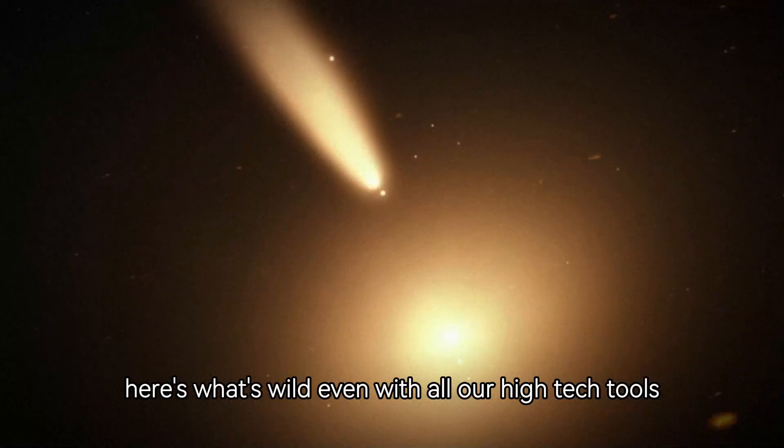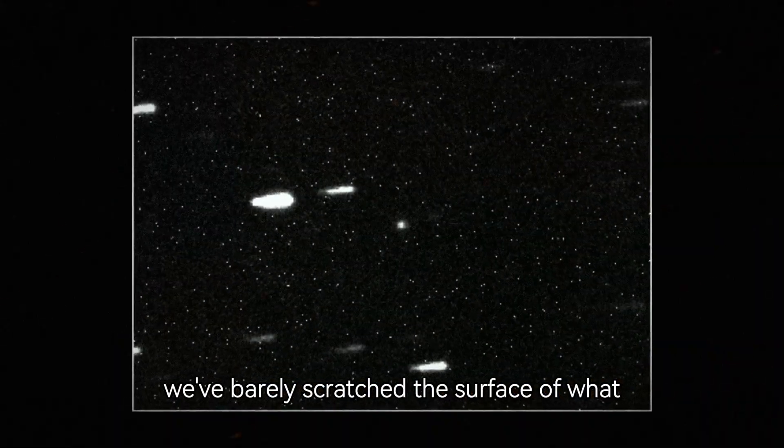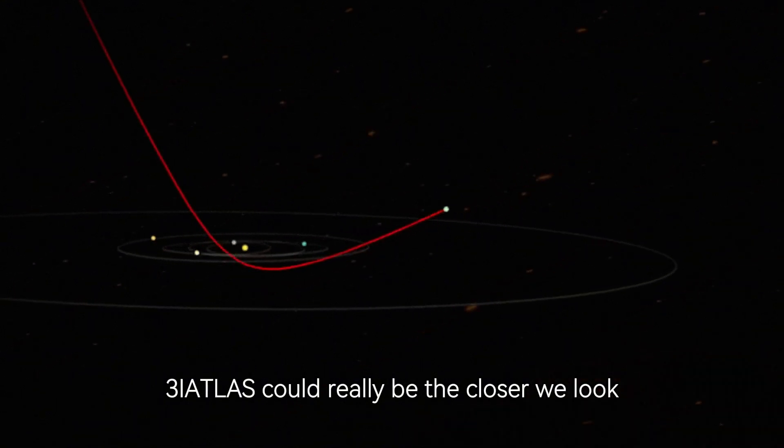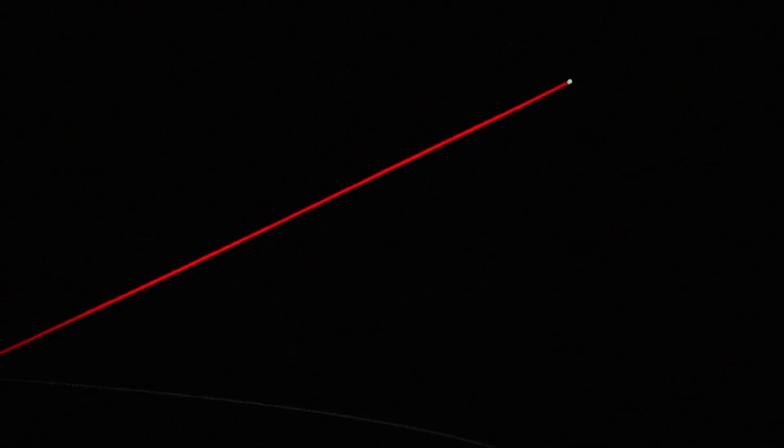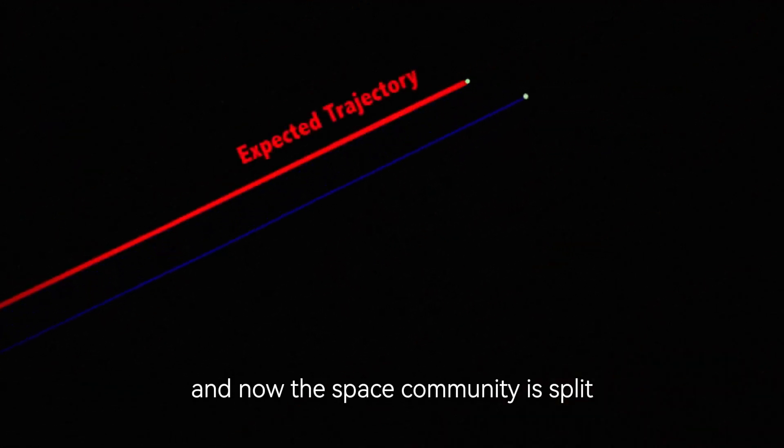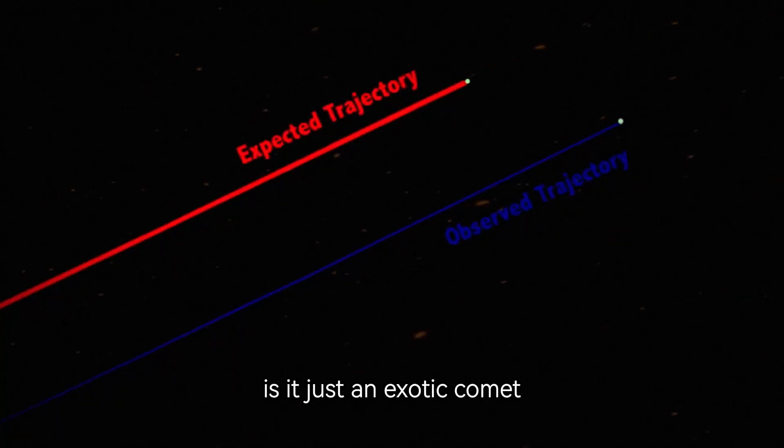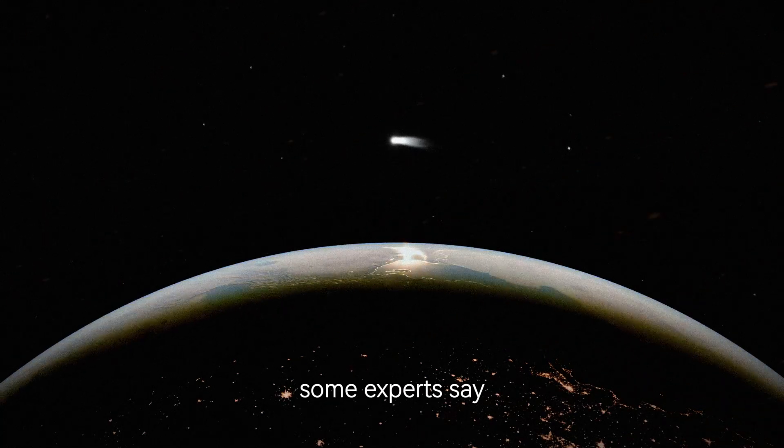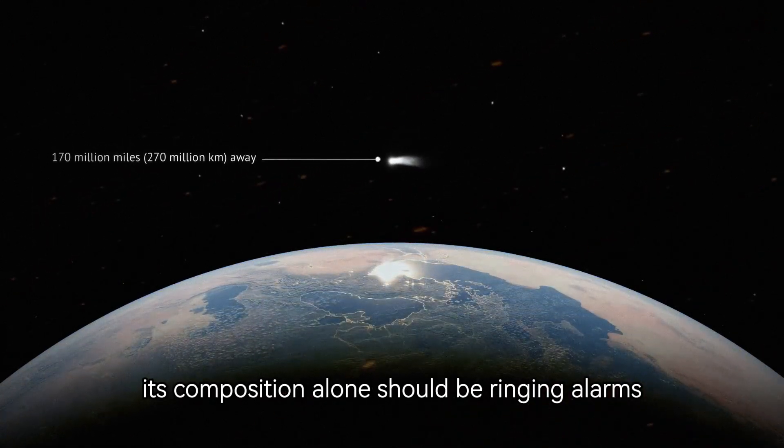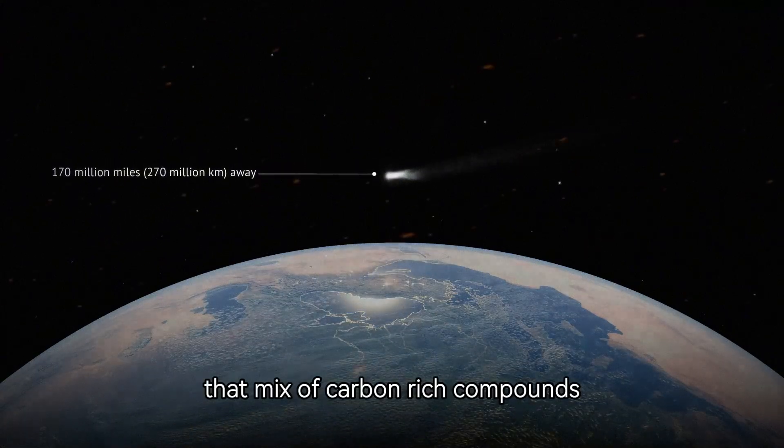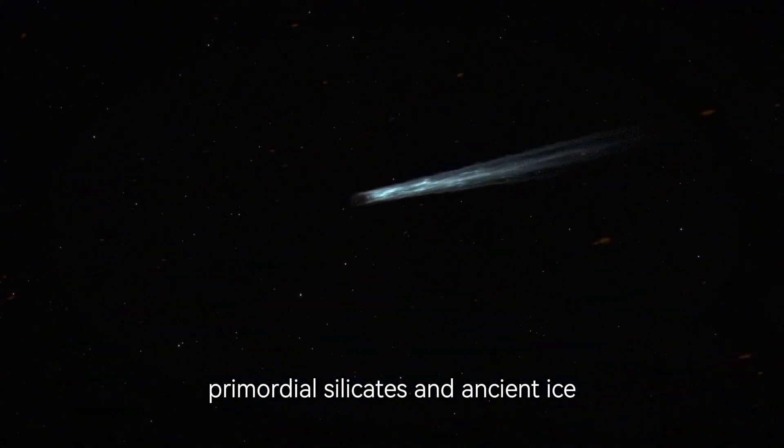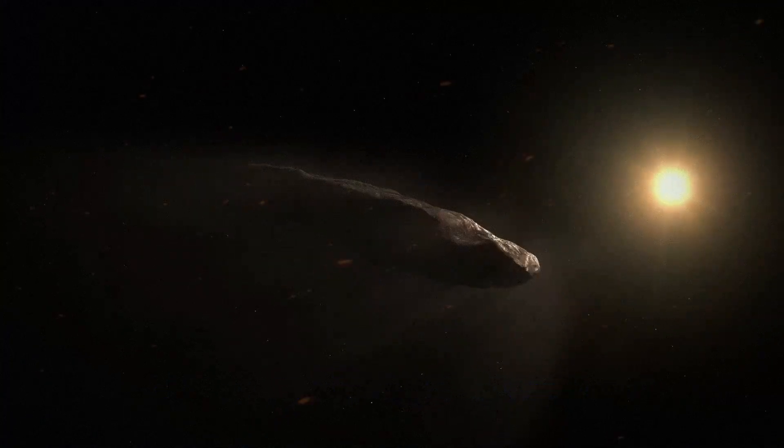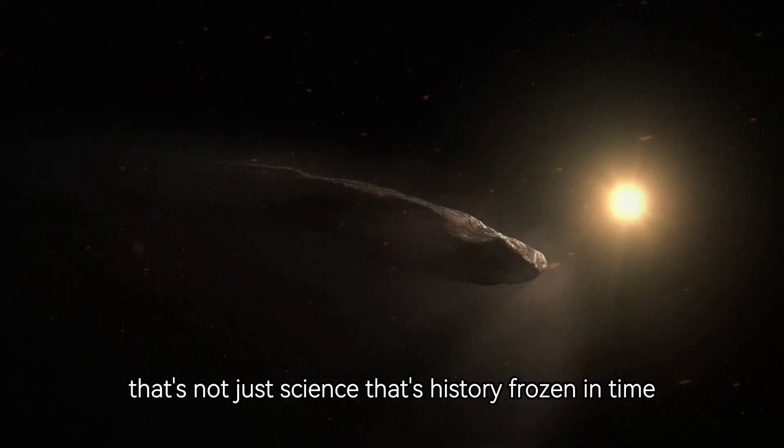Here's what's wild. Even with all our high-tech tools, we've barely scratched the surface of what 3i Atlas could really be. The closer we look, the stranger it gets. And now the space community is split. Is it just an exotic comet or the first message in a bottle from something way beyond us? Some experts say its composition alone should be ringing alarms. That mix of carbon-rich compounds, primordial silicates, and ancient ice, it's like a recipe from the galaxy's origin story. That's not just science, that's history frozen in time.